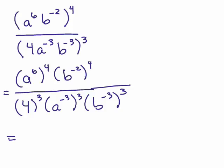Okay. So now let's multiply the exponents on each of these. I have a to the 24th, b to the negative 8th. 4 cubed is 64, so that's 4 times 4 times 4. a to the negative 9, and b to the negative 9. Now, at this point, you've got some options here.